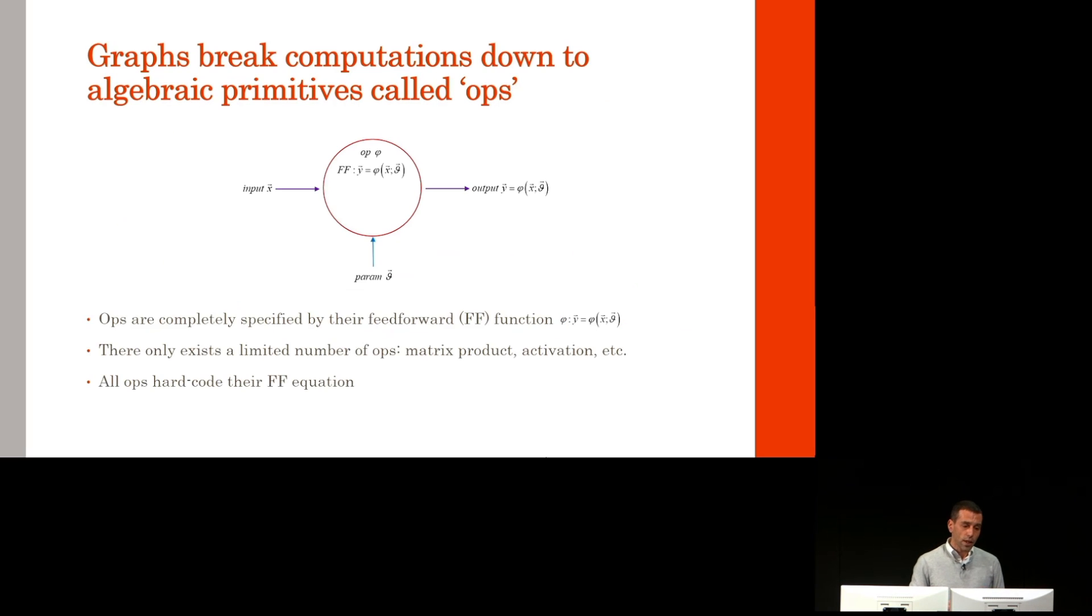Graphs break computations down to algebraic primitives that we call ops. These ops are completely specified by the feedforward equation. This is how you get the outputs Y from the inputs X and some parameters theta by application of a function phi. This function phi completely specifies the op.